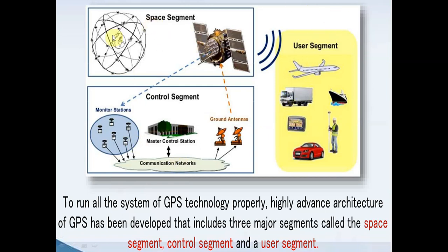On the other hand, we have satellites produced all across the world, collected in the orbit, and this is called the space segment. These satellites are connected by the ground antenna, and these antennas are connected with the satellites.